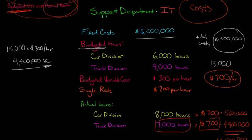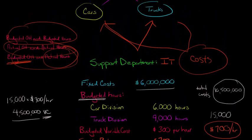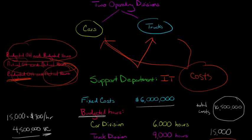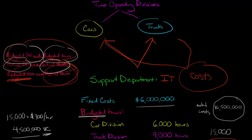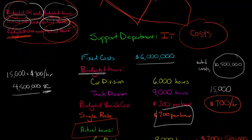To recap: we calculated this single overhead rate using budgeted variable costs and budgeted fixed costs, then applied it using actual hours. This isn't the only approach — you could also use budgeted overhead applied on budgeted hours, or wait until the end of the period to use actual overhead and actual hours. But the key idea of the single rate method is combining variable and fixed costs into one single rate and then applying it.